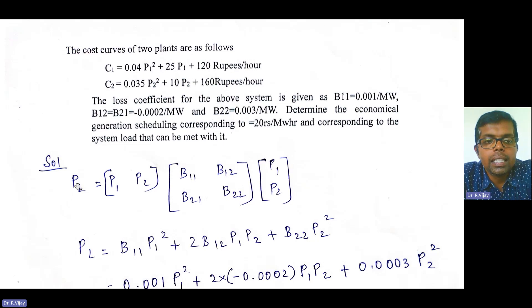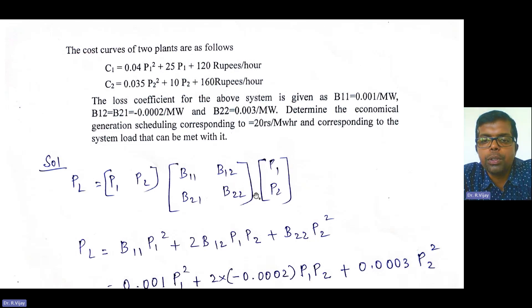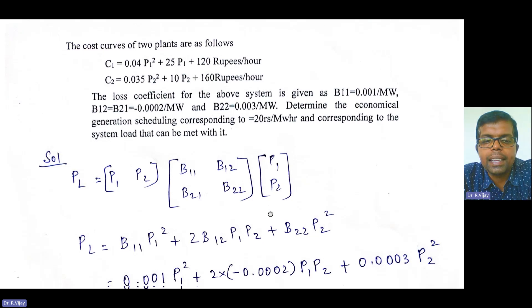The transmission loss PL is expressed using the B-coefficient matrix as: PL = [P1, P2] × [B11, B12; B21, B22] × [P1; P2]. This is the matrix form for power loss.